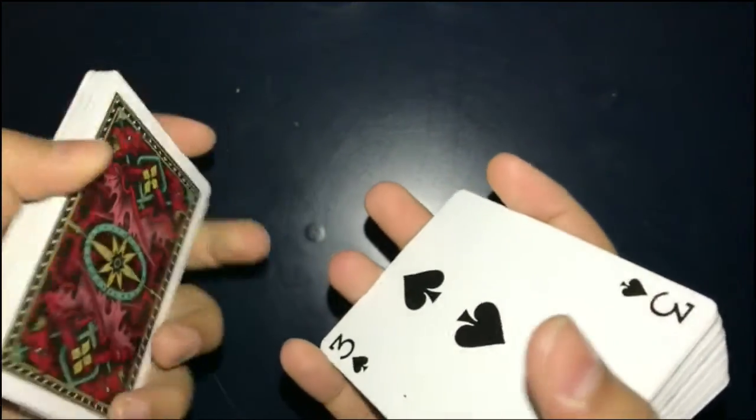Then simply cut the deck. When you cut the deck, the key card will go directly on top of their card. Next, you will say two cards will help you find their card.